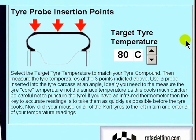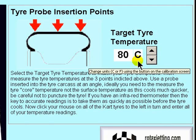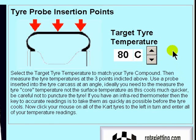The selection of a target tyre temperature is vitally important, as you need to match the target tyre temperature with the optimum tyre temperature obtained from your tyre manufacturer. This information can also be displayed in degrees Fahrenheit if required by the user, by simply selecting the imperial units on the weather station calibration page of this software.